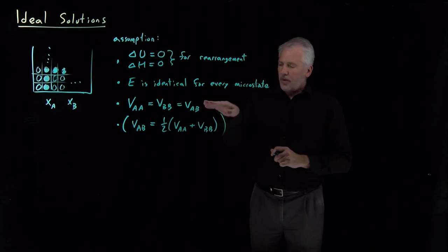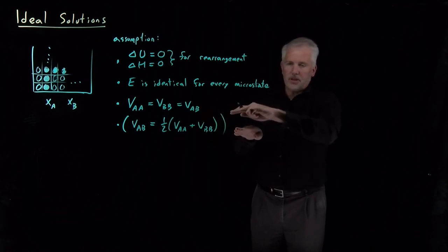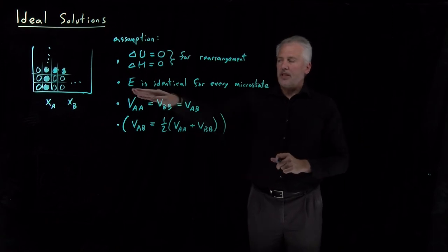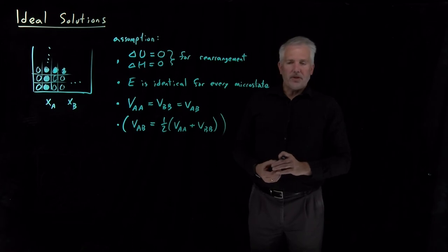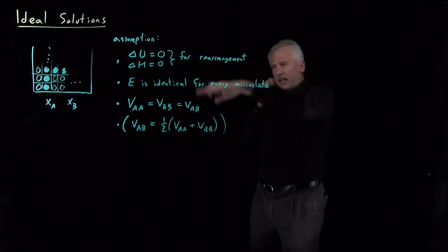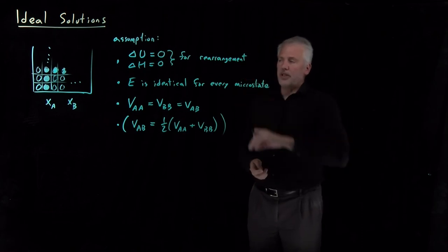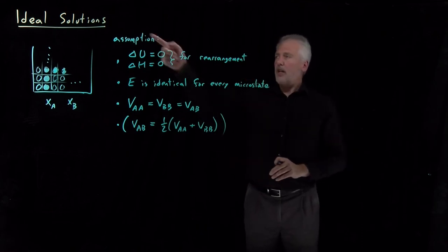But whichever one of these we think about, the purpose of making this assumption at the microscopic level is to guarantee that the energy doesn't change for each one of my microstates. So all those microstates are degenerate. They're the same energy as one another. So whichever one of these you want to think about, these are all equivalent assumptions for an ideal solution.